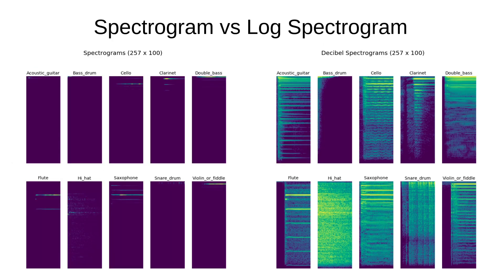Let's look at a normal spectrogram versus a log spectrogram. On the left is the output of a normal STFT, and you have the option to take the log to get a decibel spectrogram. In my opinion the decibel spectrogram looks a lot more interesting visually, and Capri does have an option to toggle this on and off.